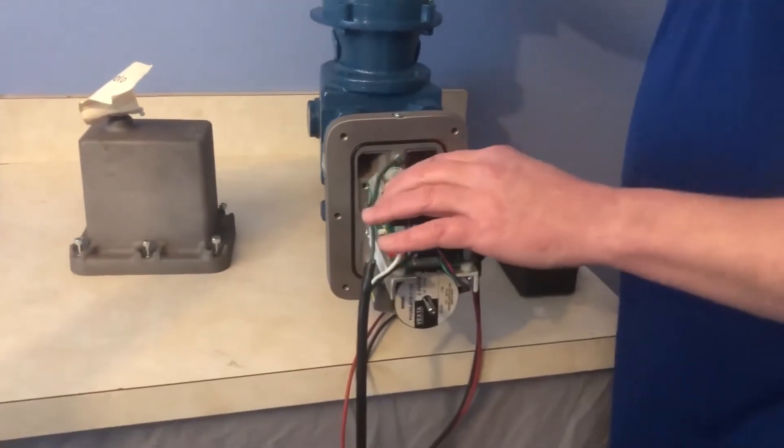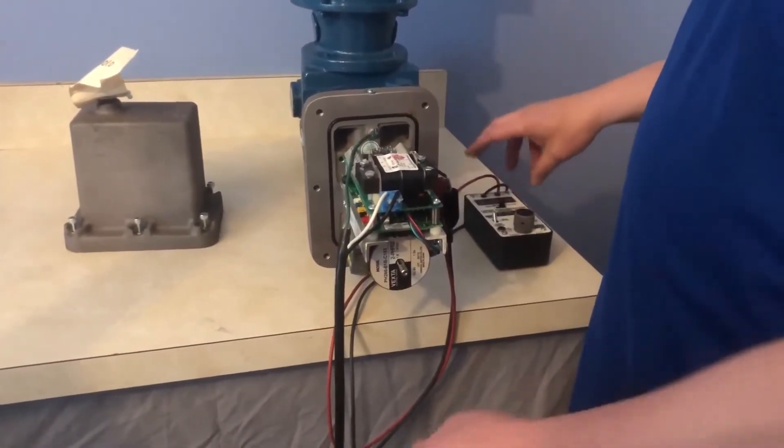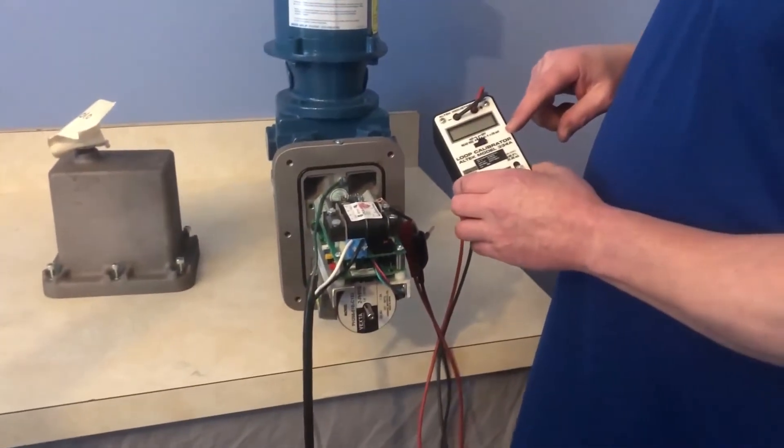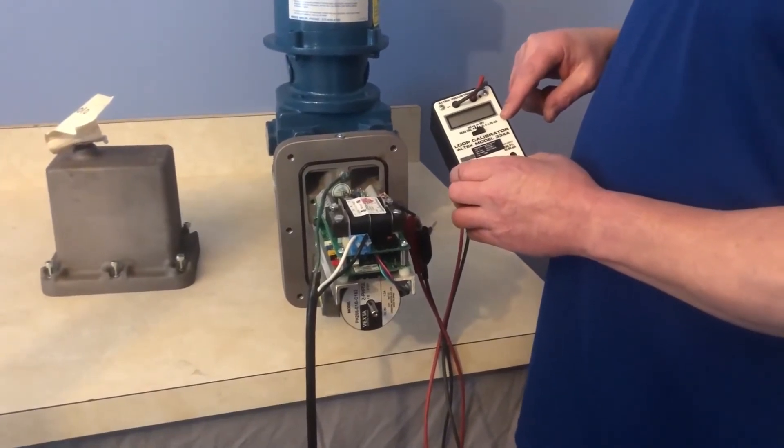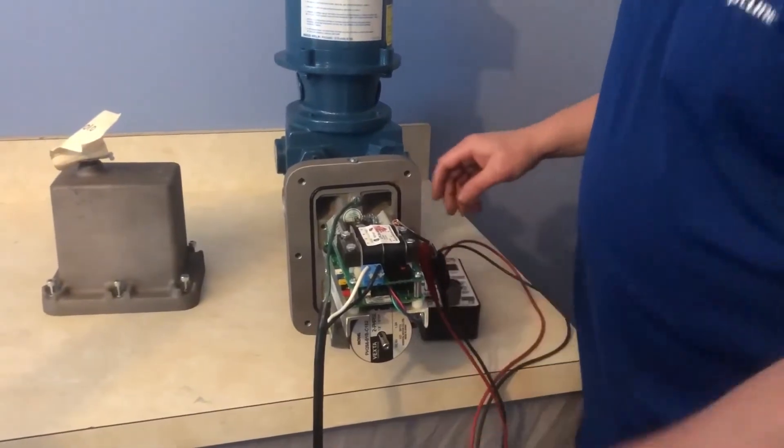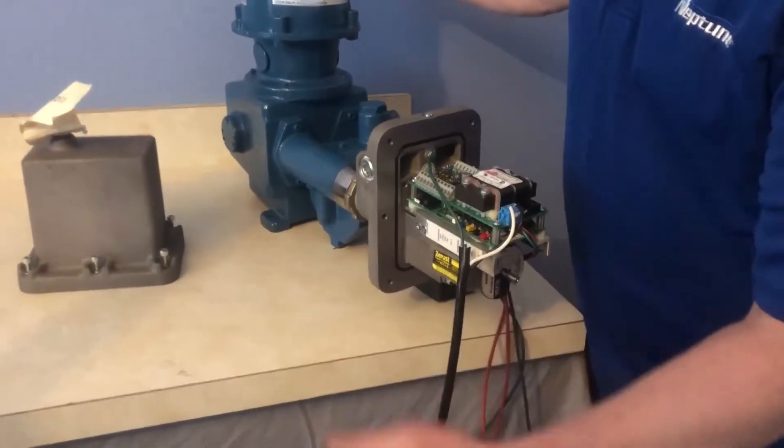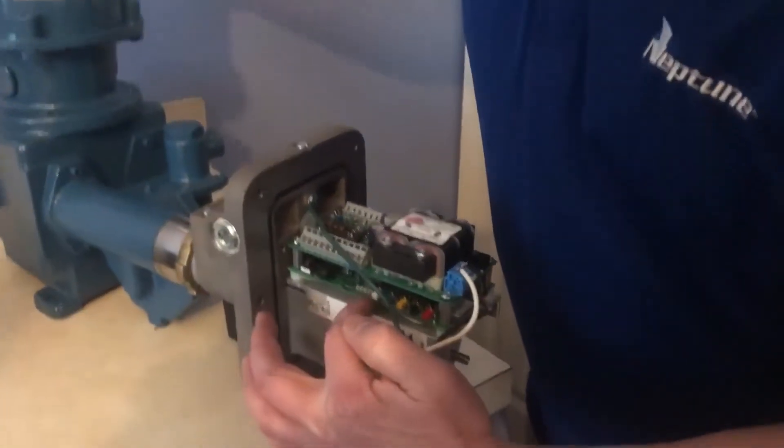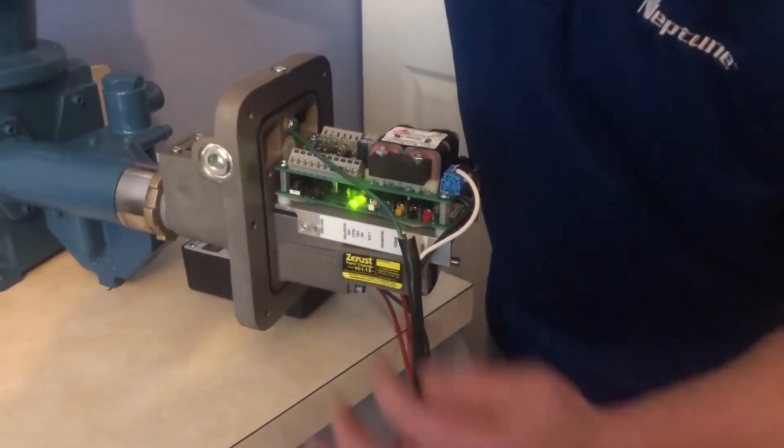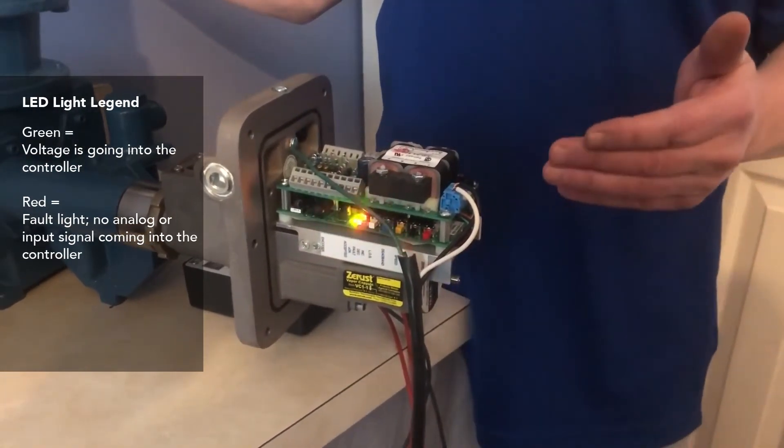So what we're going to do here, we're going to show you it being turned on. We have our voltage in and we have our simulator that will simulate the four to 20 milliamp signal going into the pump. We'll turn on our voltage. Actually, what we'll do is come to this side. You see these little LED lights. When I turn power on, you see the green basically tells you that there's voltage going into the controller.